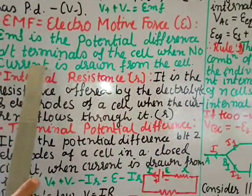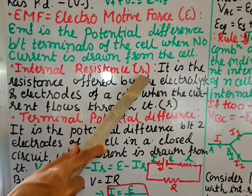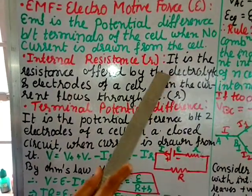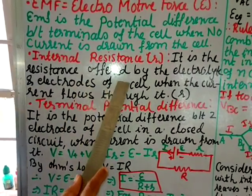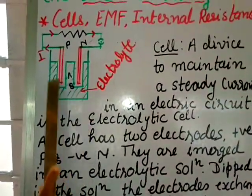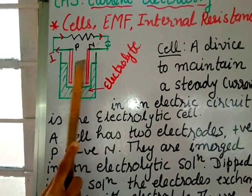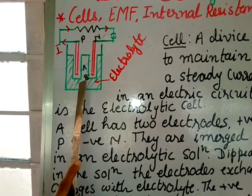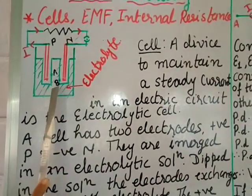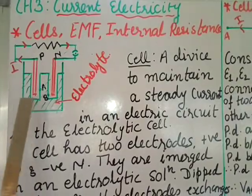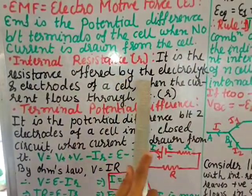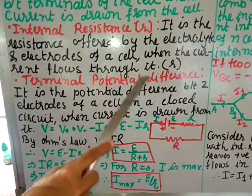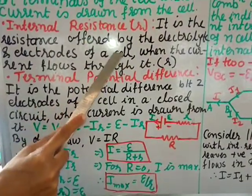EMF is the potential difference between terminals of the cell when no current is drawn — meaning the circuit is open. Internal resistance is connected with the cell. It is the resistance offered by the electrolyte and electrodes of a cell when current flows through it. There is resistance between the electrodes and the electrolytic solution, and that is called internal resistance. Its symbol is small r.